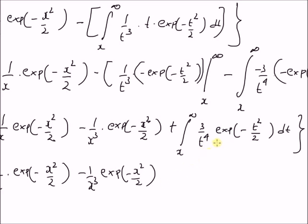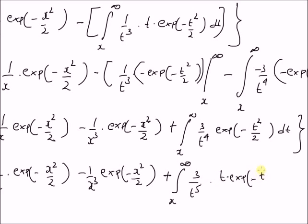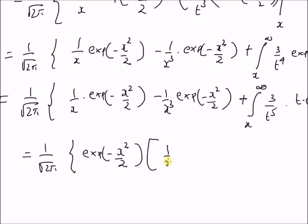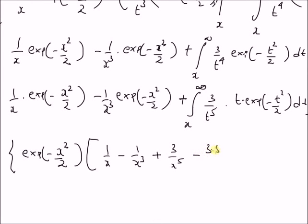Repeating this process, with f(t) = 3/t⁵ and g'(t) = t × exp(−t²/2), we can clearly write that the integral becomes (1/√(2π)) × exp(−x²/2) multiplied by the series: 1/x − 1/x³ + 3/x⁵ − (3×5)/x⁷ + and so on.